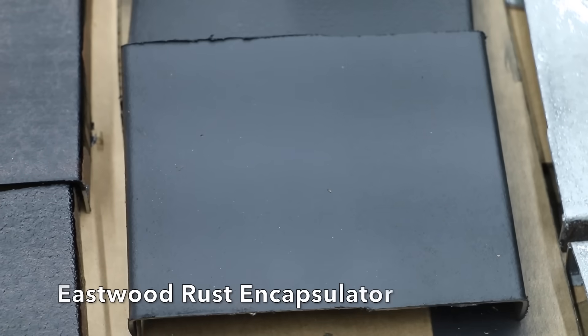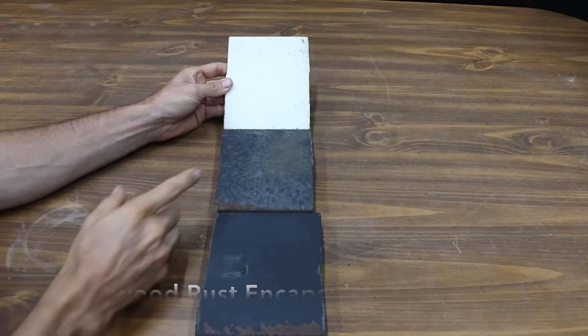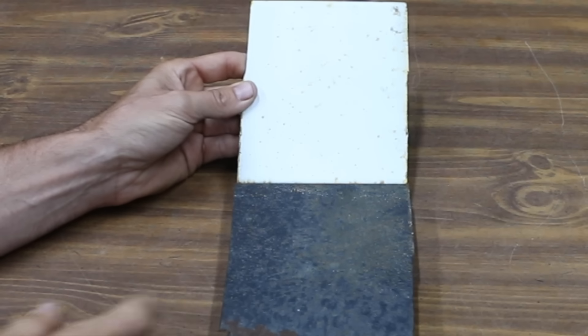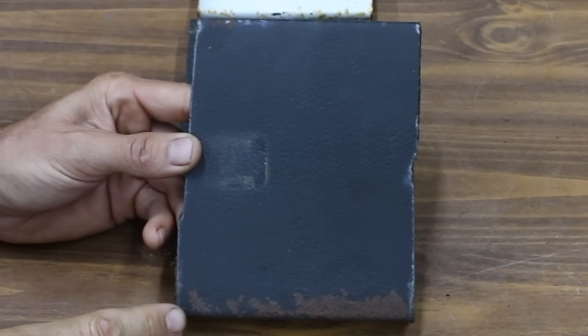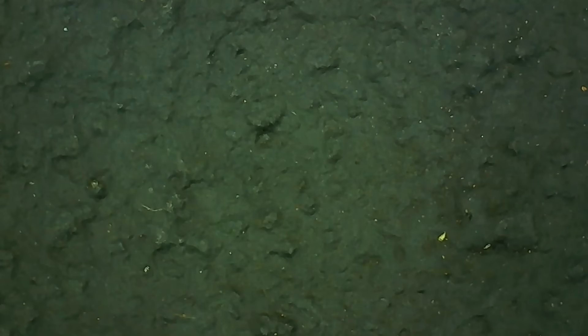The Eastwood looks nearly the same as the Rust-Oleum Rust Reformer. Coming in second place is the Eastwood Rust Encapsulator. The Eastwood did a very good job with just a very small amount of rust popping through on the top two panels. The encapsulator is peeling off a little bit at the bottom of the panel. That's probably more my fault because I probably did not apply a good enough coating near the edge of the metal.